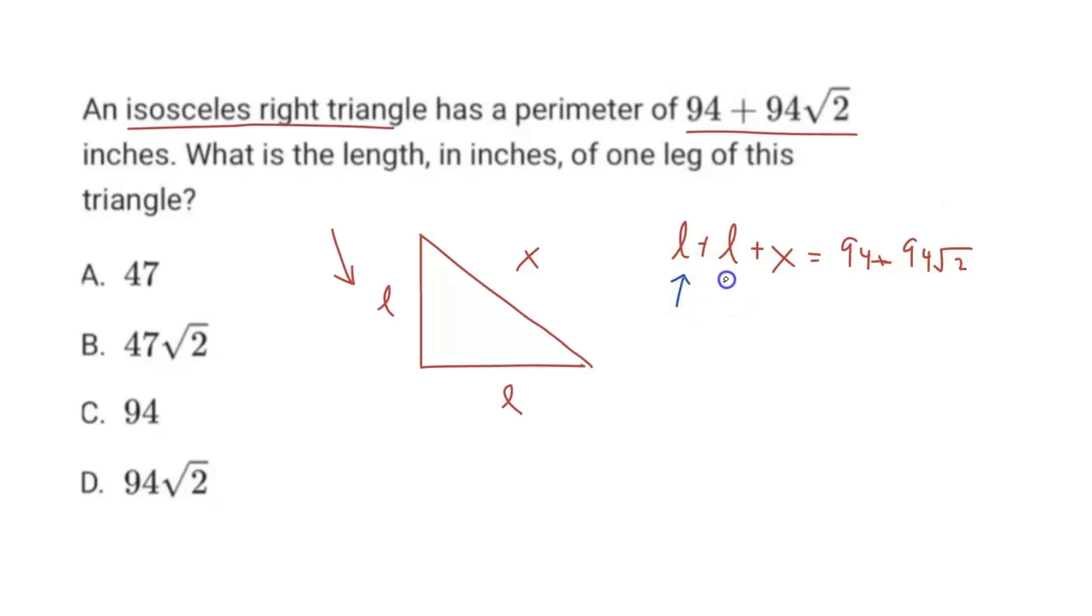And the only thing not expressed in length is our current hypotenuse value we've called X. If we get this hypotenuse value expressed in L, then we have like terms and we can just isolate and solve for that term. That would ultimately give us the length of one of those legs.